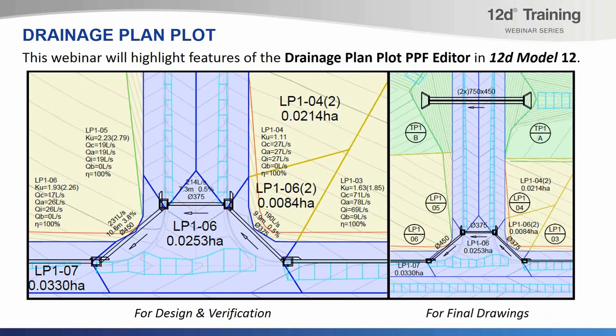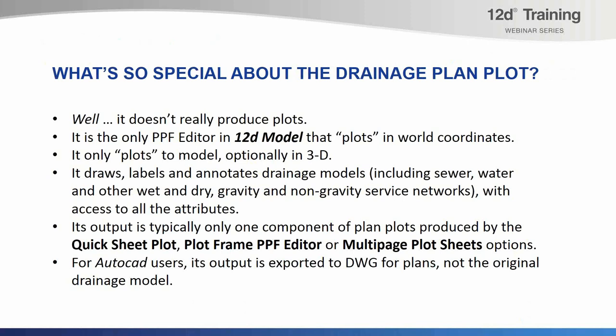We'll have a look at both of these and try to produce drawings that show examples of both. So what is so special about the drainage plan plot? The main thing is that unlike all the others, it doesn't really produce a plot to paper space — it plots in world coordinates because it's really just labeling a drainage model. It can in some cases label in three dimensions and have Z values as well. It only plots to model; it can't plot directly to DWG or to PDF.